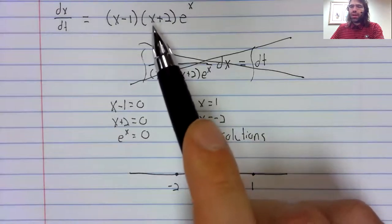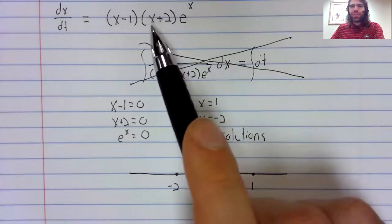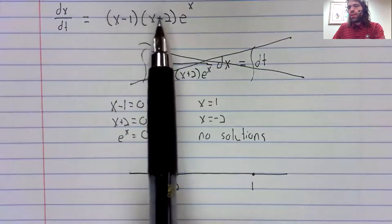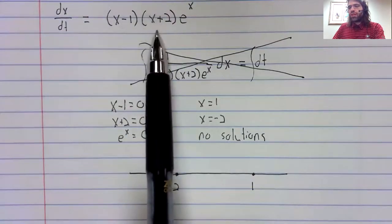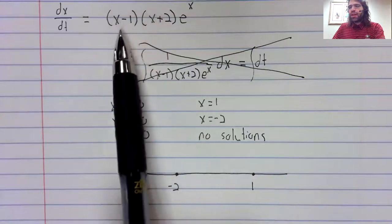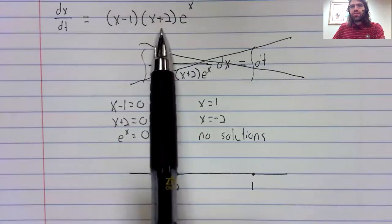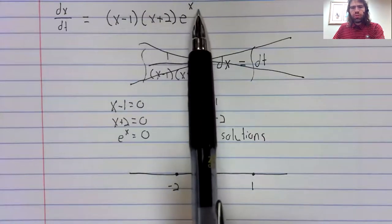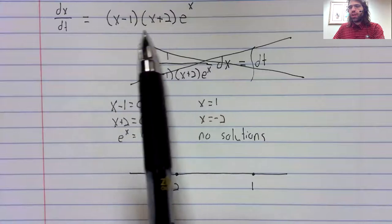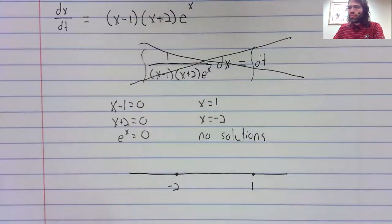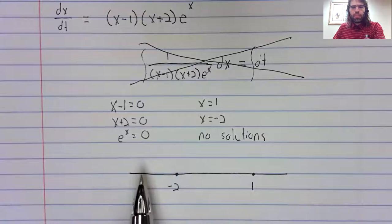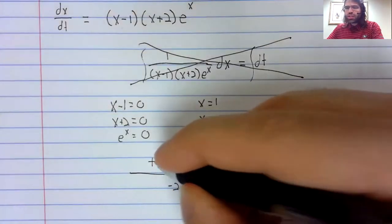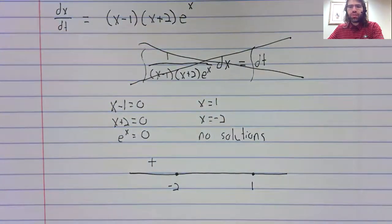Negative three minus one is negative four. Negative three plus two is negative one. A negative times a negative is a positive. E to the negative three is also positive. So this product is positive. And because it was positive somewhere in this interval, it's positive everywhere in this interval.